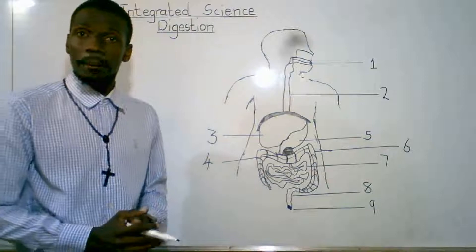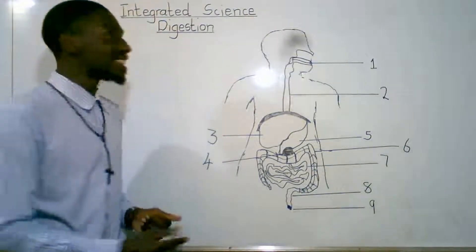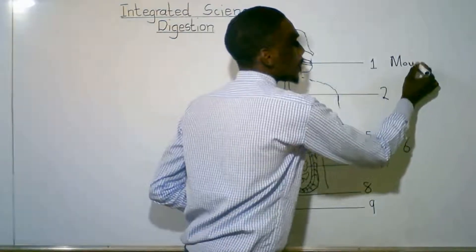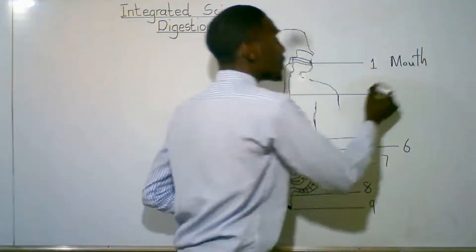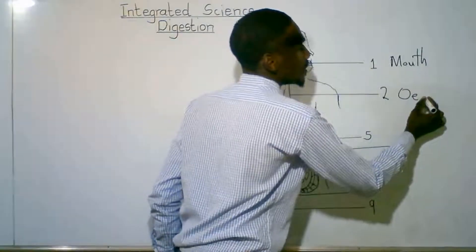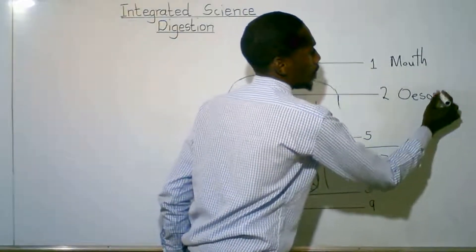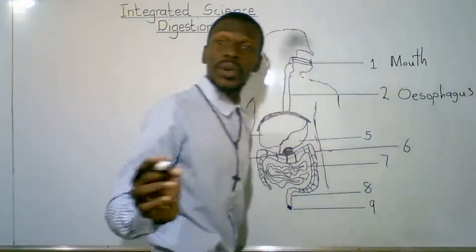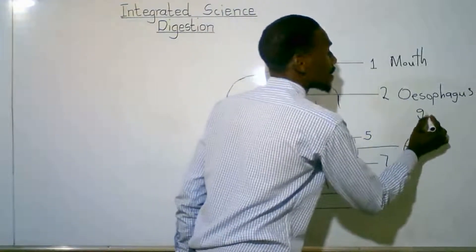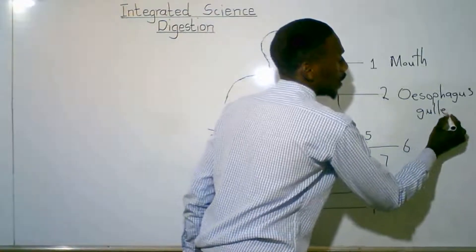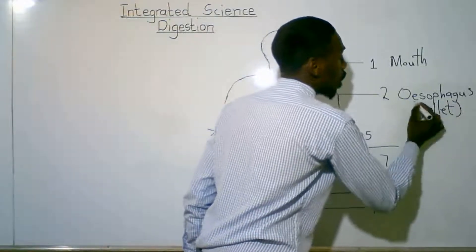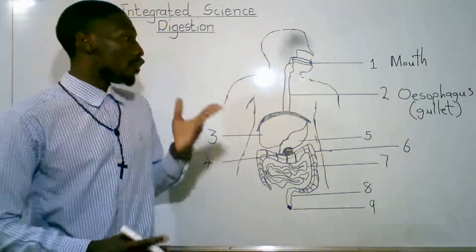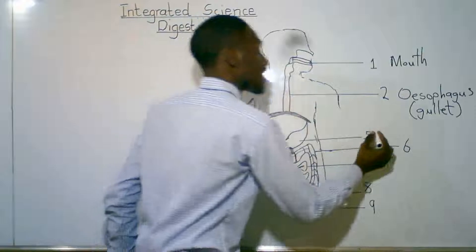Let's mention parts of the digestive system. We've got, one, the mouth. From the mouth, we've got the esophagus, also known as the gullet. From the gullet, we've got the stomach.